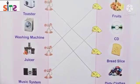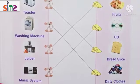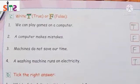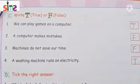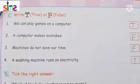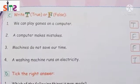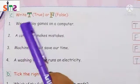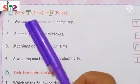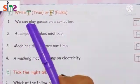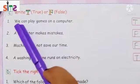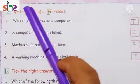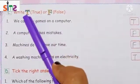Now let's see the third exercise. Your third exercise is true or false — write T for true and F for false.